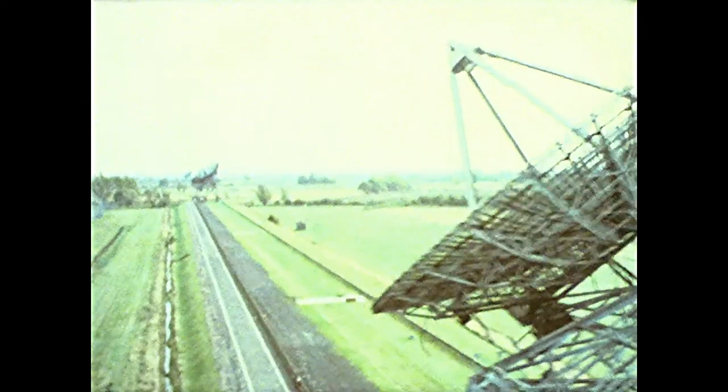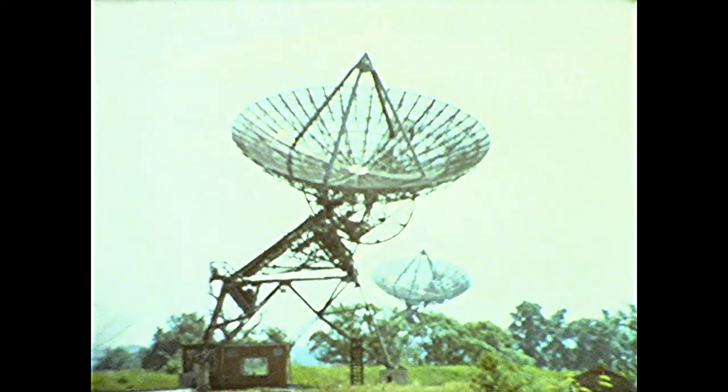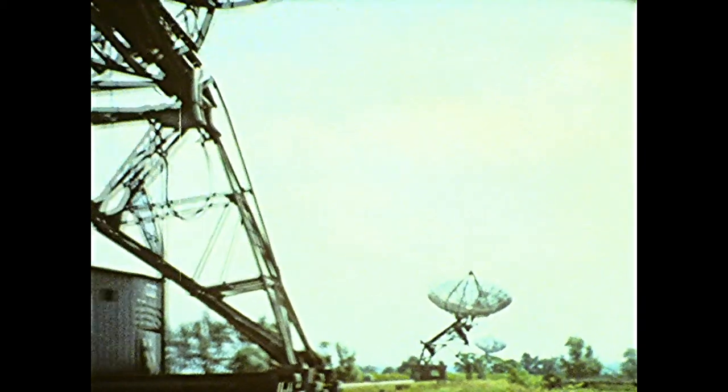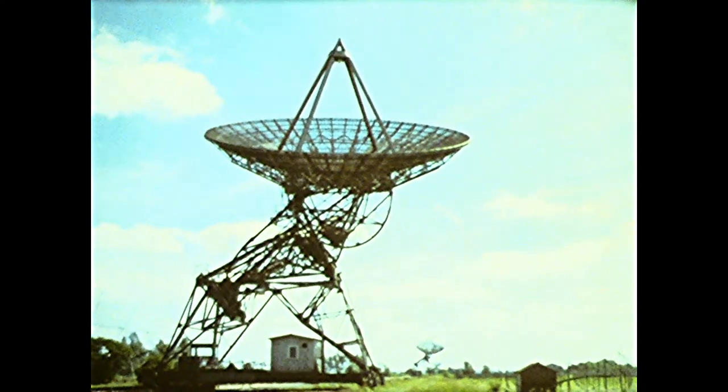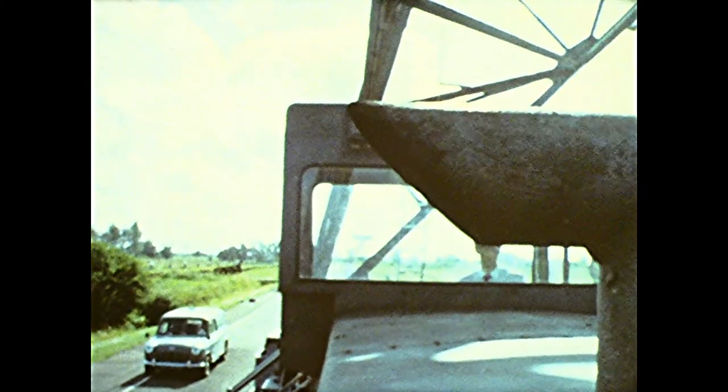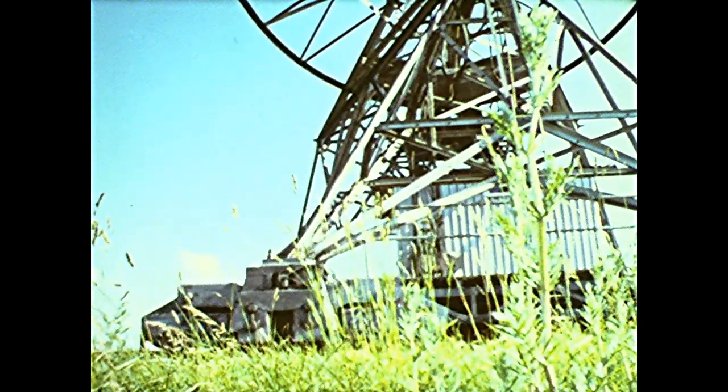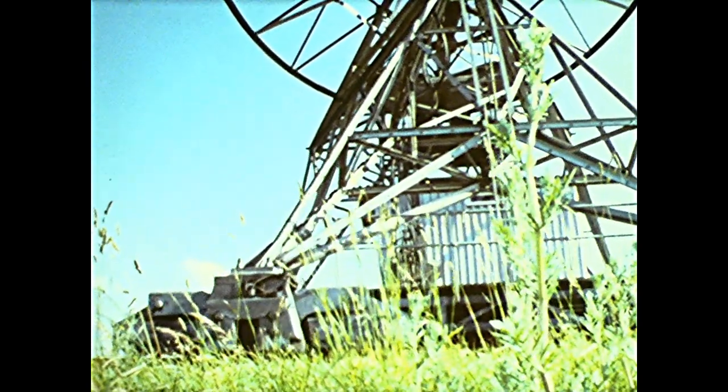At Cambridge, the famous one-mile telescope, one of the most important scientific instruments in the world, uses 60-foot dishes to synthesize an aerial one mile in diameter. That is to say, it maps the sky exactly as if it were a steerable dish one mile across. This telescope has three dishes. Two are fixed exactly half a mile apart. The third moves on rails for a further half mile.